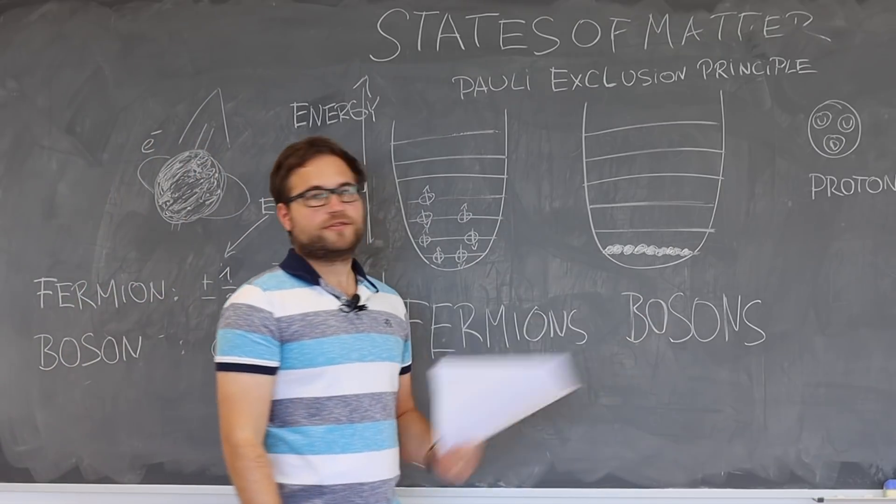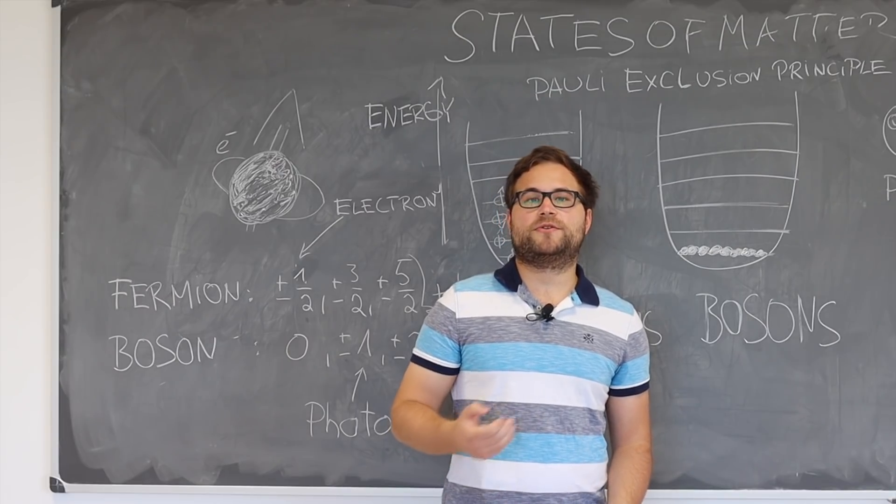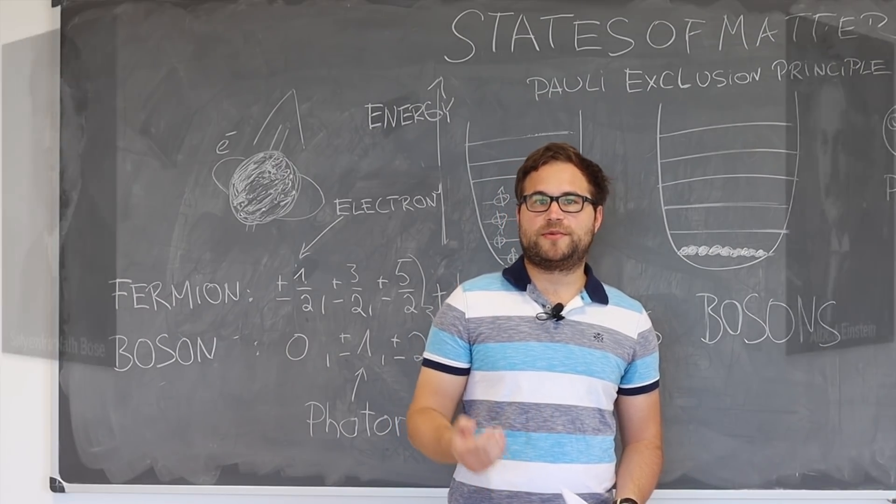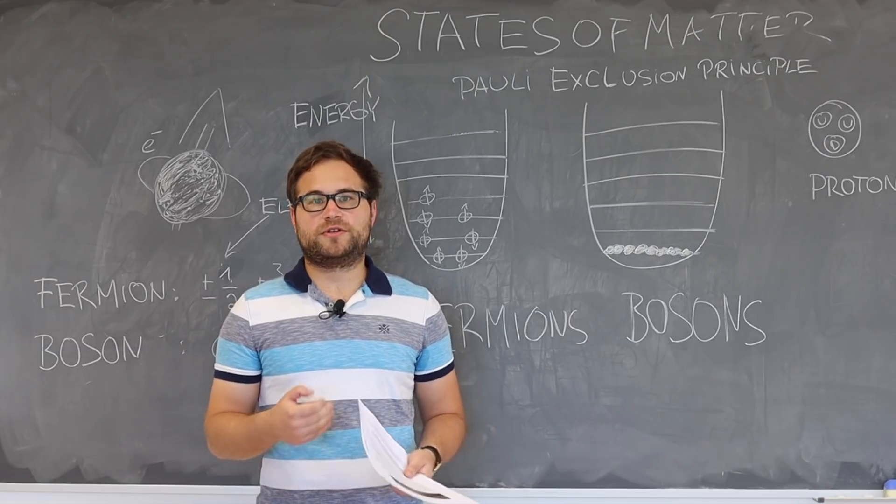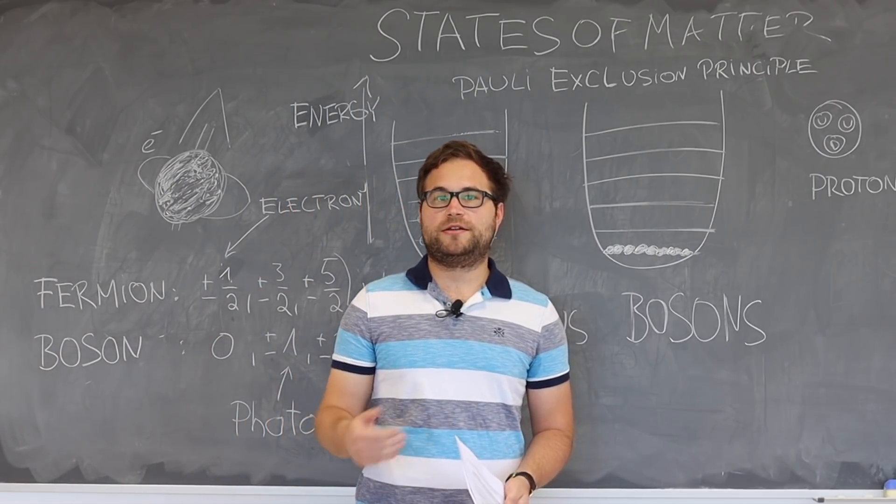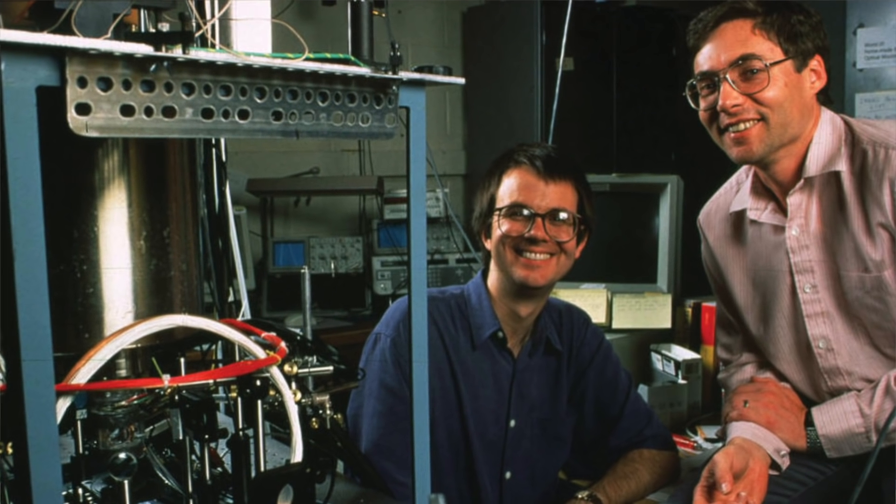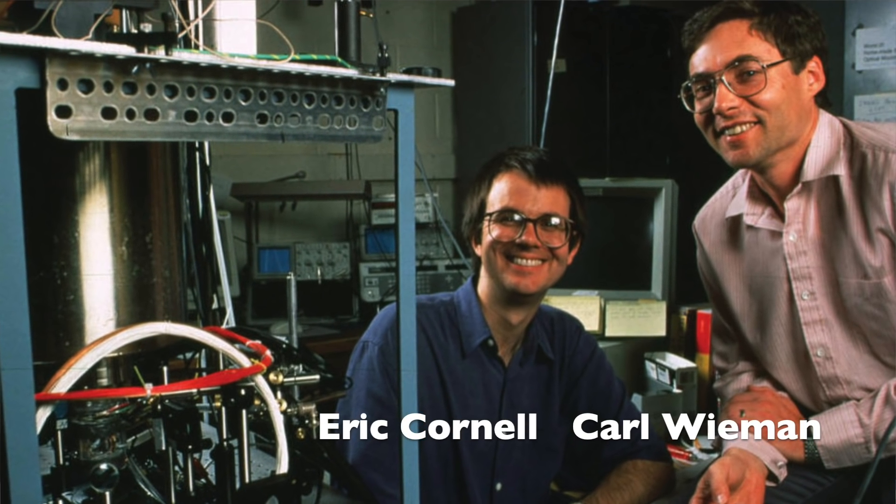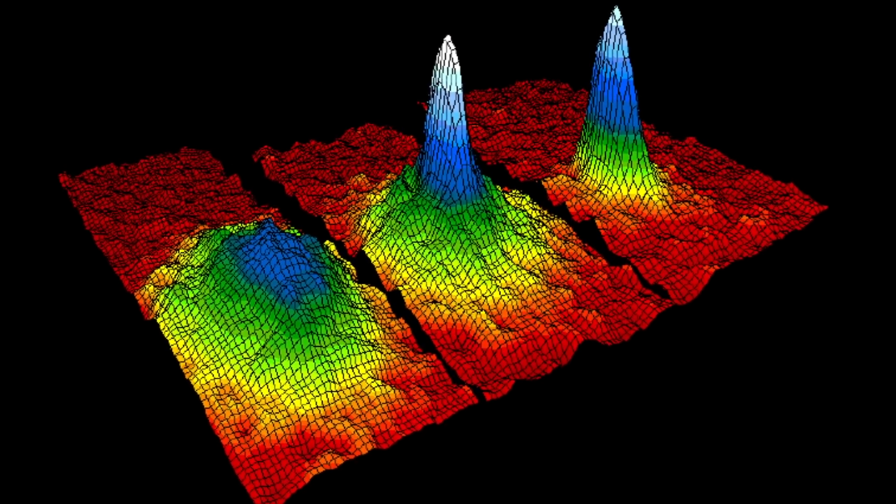On the other side, bosons don't have to obey the Pauli exclusion principle. The Bose-Einstein condensate was discovered in the 1920s by Satyendra Nath Bose and Albert Einstein, but due to technical limitation it was only a theoretical state until 1995. In 1995, teams of scientists like Eric Cornell and Carl Wieman were able to produce the state of matter.